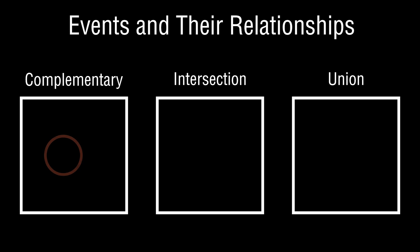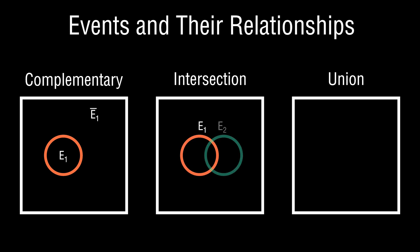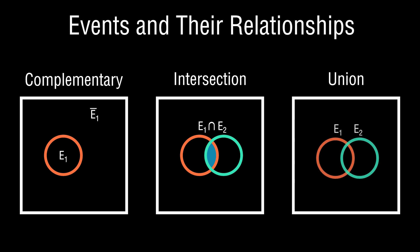Complementation simply reflects: say I have an event defined as E1. We usually use an E-bar above to denote the event that is not E1 — the complement of the event of interest. The next idea is intersection: suppose I have two events E1 and E2. The intersection reflects, as the name suggests, the joint occurrence of the two events, highlighted here in the blue shaded region.